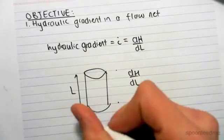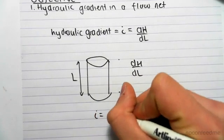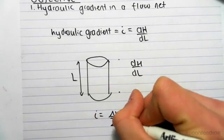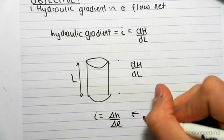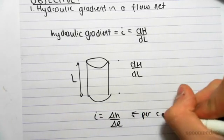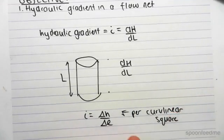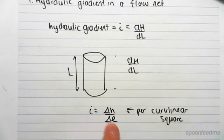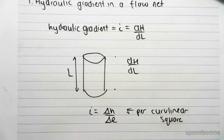So the formula is the same. The hydraulic gradient is now equal to the change in little h over the change in little l. So it's a change in head over change in length. And this is per curved linear square. So the hydraulic gradient is going to change at every single square, because you're going to be getting different changes in length.